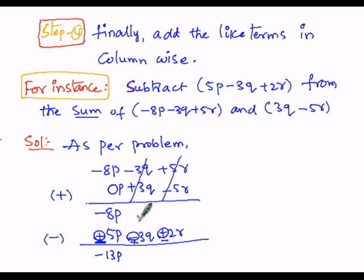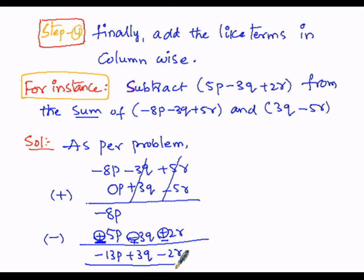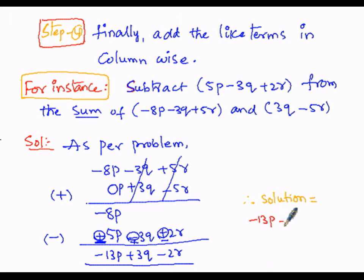Since 8 is greater than 5 and the sign of 8p is negative, the result is −13p. The new sign for the q term gives +3q, and for r it gives −2r. Therefore, the required solution is −13p + 3q − 2r.